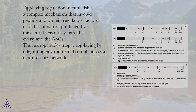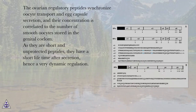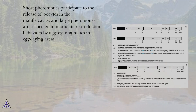The neuropeptides trigger egg-laying by integrating environmental stimuli across a neurosensory network. The ovarian regulatory peptides synchronize oocyte transport and egg capsule secretion, and their concentration is correlated to the number of smooth oocytes stored in the genital celem. As they are short and unprotected peptides, they have a short lifetime after secretion, hence a very dynamic regulation. The waterborne sex pheromones, cleaved from three protein precursors overexpressed in the oviduct gland, stimulate and facilitate mating and reproduction behaviors by aggregating mates in egg-laying areas. Short pheromones participate in the release of oocytes in the mantle cavity, and large pheromones are suspected to modulate reproduction behaviors by aggregating mates in egg-laying areas.